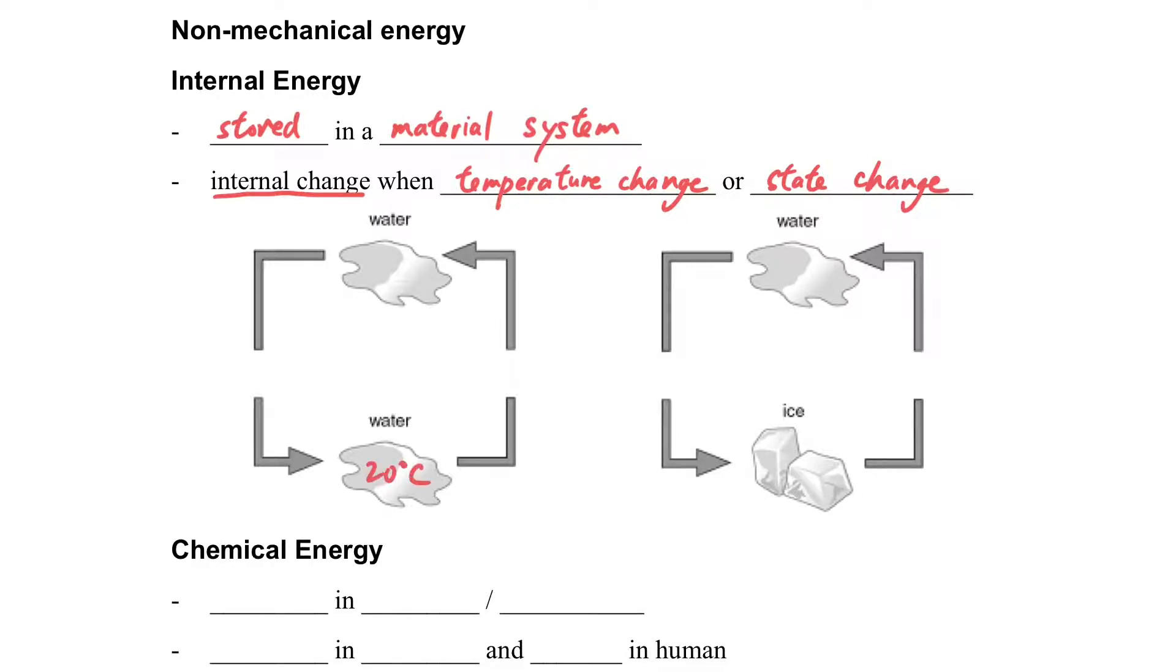So when the object changes from the lower temperature to higher temperature, its internal energy will increase. And when it's changed from the higher temperature to lower temperature, then the internal energy will decrease in that case. When an object changes from solid to liquid state, it will increase the internal energy. And in reverse, the internal energy will be decreased. For further details, we may refer back to the topic of heat.